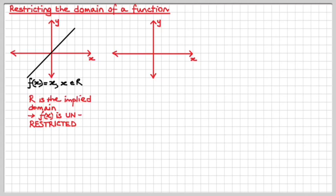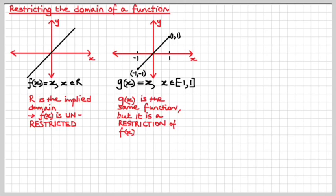But have a look at this now. Now this is g of x. g of x is the same function except I've called it g of x, a different notation because it is different from this in the sense that the domain is now restricted. x only goes from minus 1 to 1 inclusive. See that? A restricted function. So g of x is the same function, but it is a restriction of f of x.